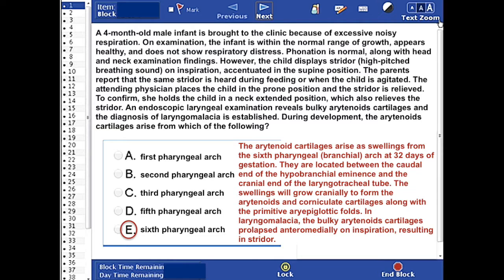In laryngomalacia, the bulky arytenoid cartilages prolapse anteriorly and medially on inspiration, resulting in stridor.